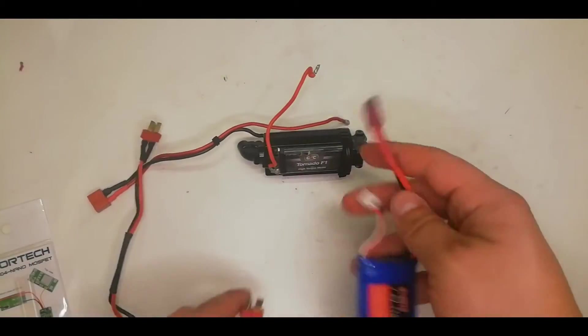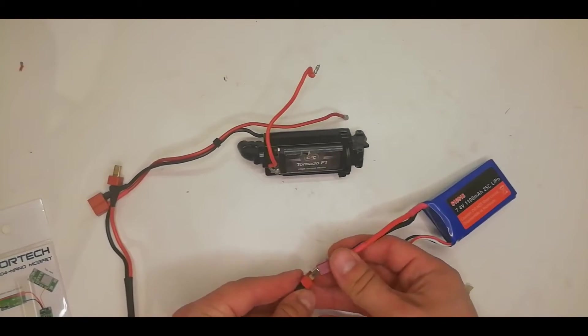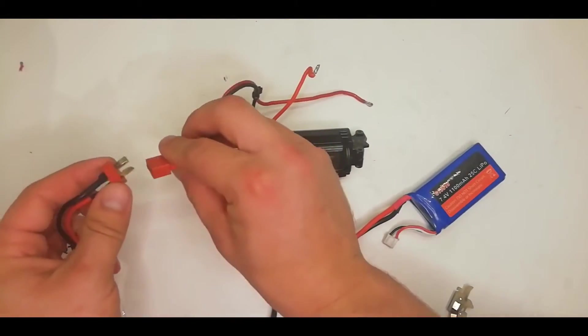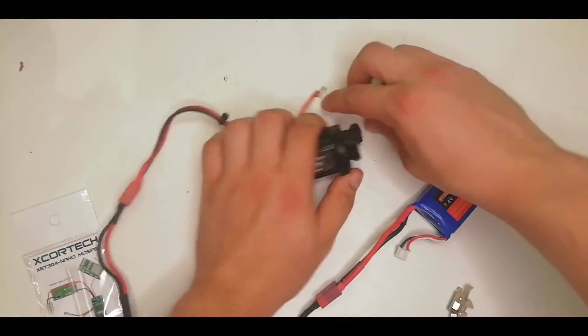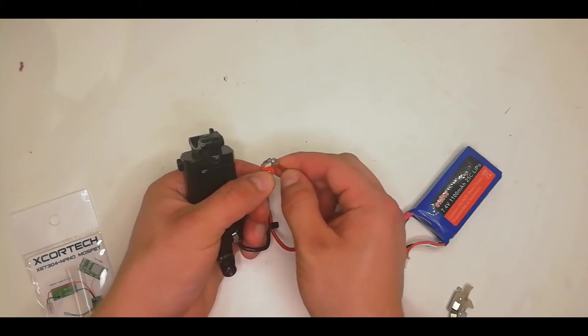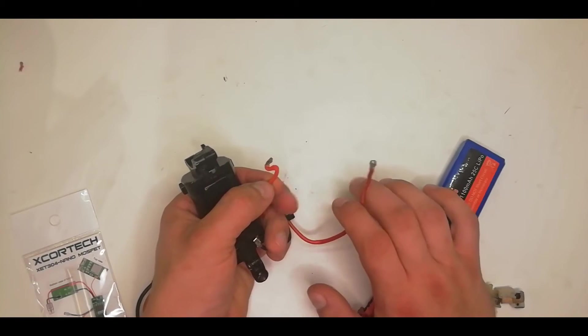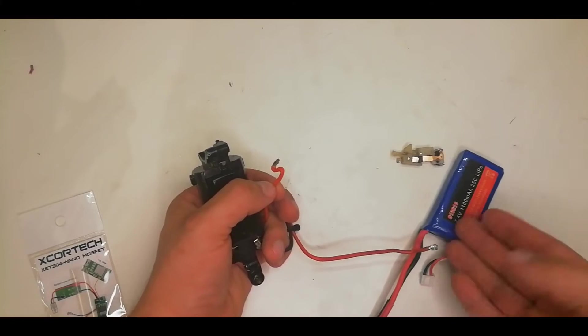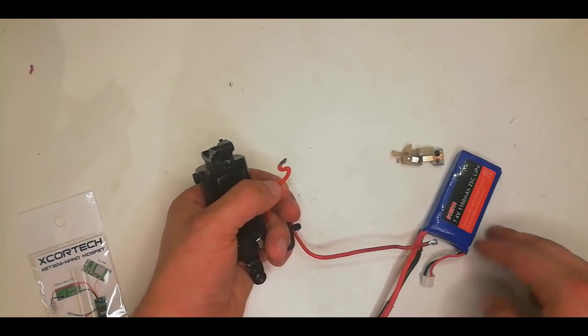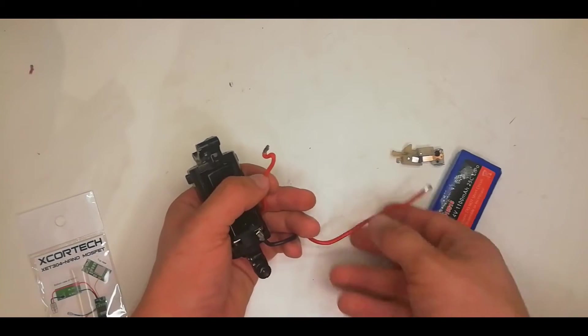For testing purposes we're going to be using a 7.4 volt 1100 mAh 25c LiPo. And this is your typical bog standard AEG wiring. Now a battery puts out direct current and direct current is notoriously hard to switch without getting an arc. And if you're trying to switch a big inductive load like a high torque motor, you're going to get a lot of sparking. As you'll be able to see when you're switching the motor on and off, you'll get a lot of sparking at the contact.